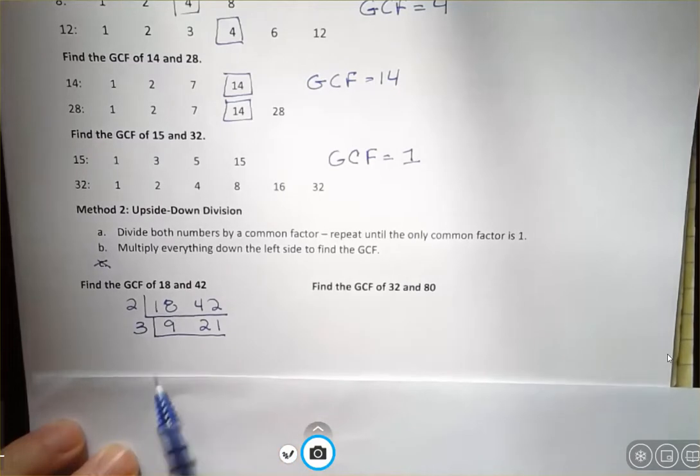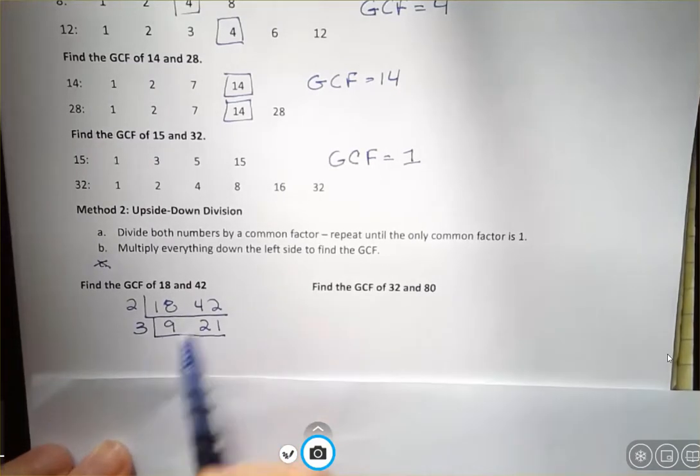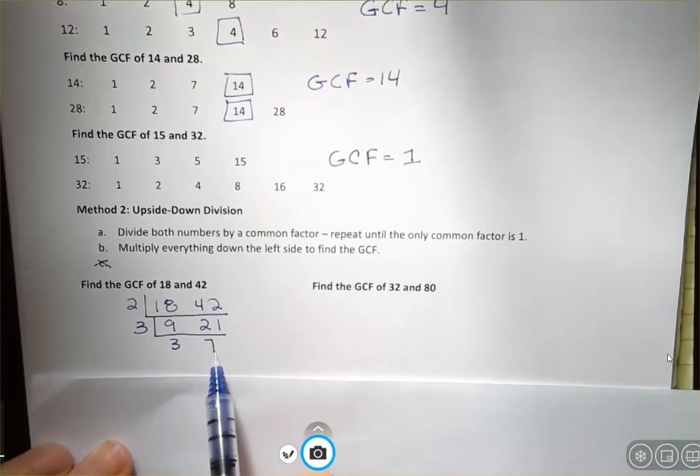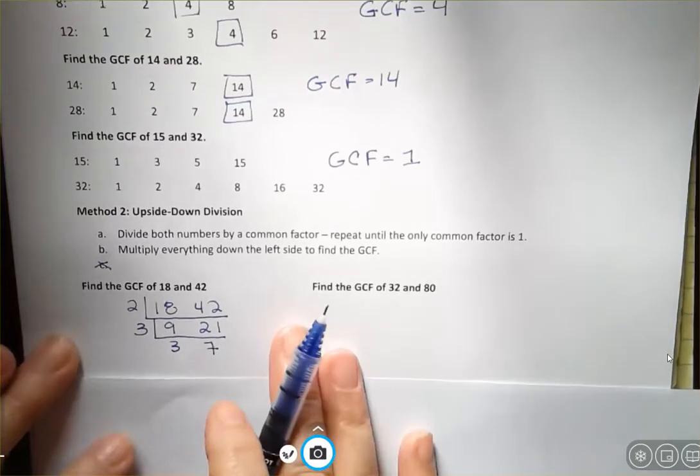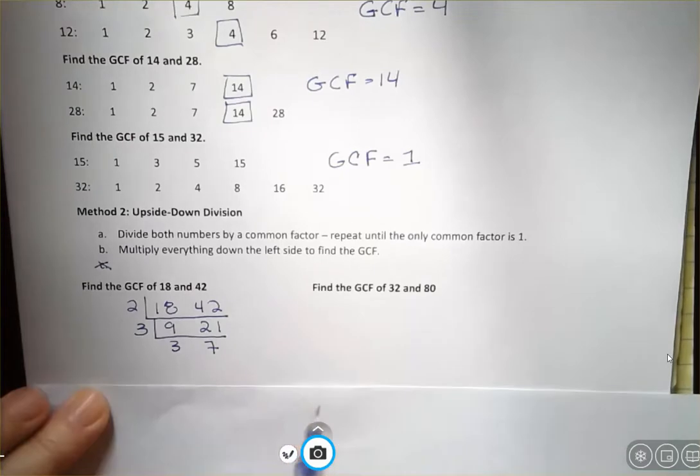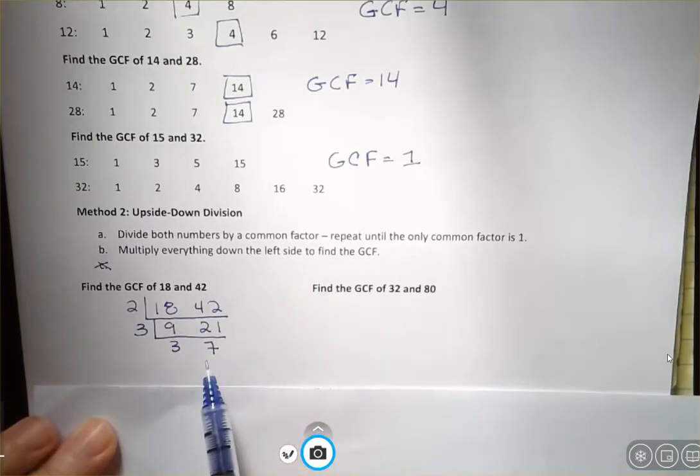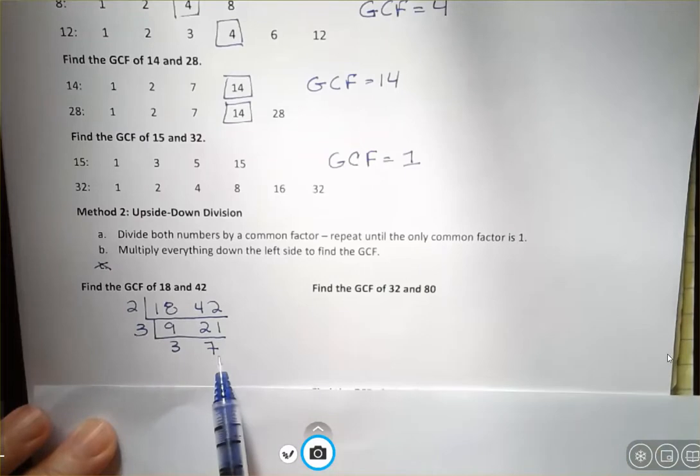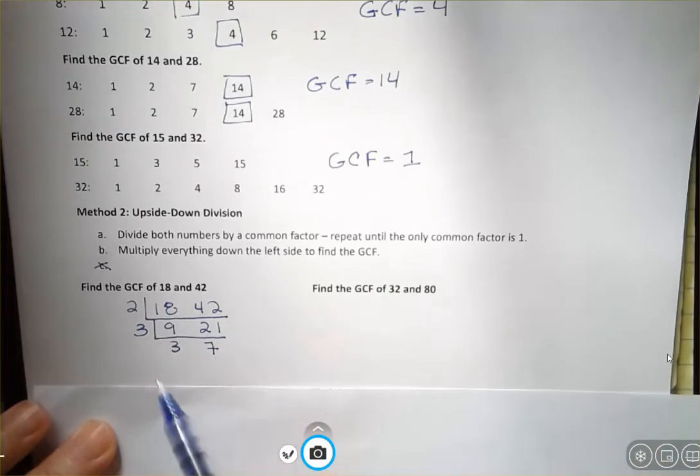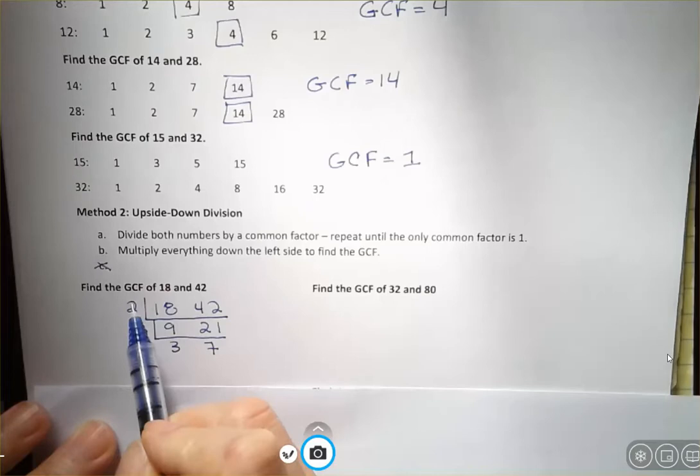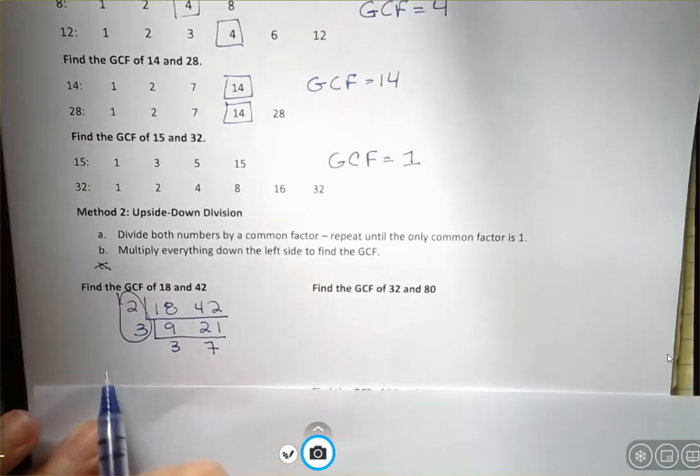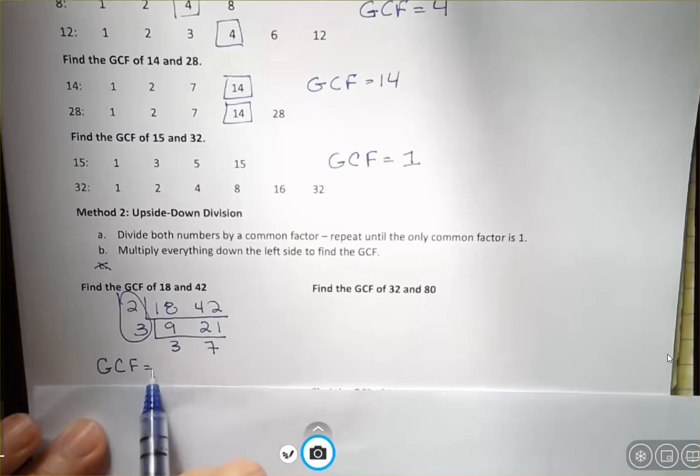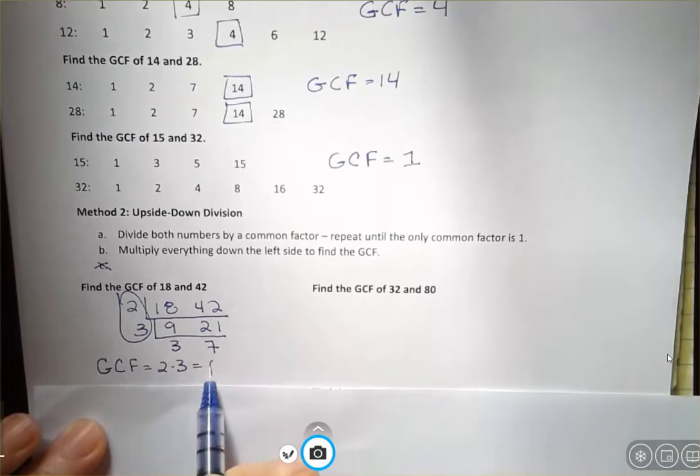And I can see that three goes into both of these. And if you're not sure, of course, you can use your calculator to find those numbers they have in common. Three goes into nine three times, and three goes into 21 seven times. Then you ask yourself, is there anything that goes into three and seven? And again, we want to do this until the only common factor is one. And as we said before, everything has a one in common. So there's nothing. So then we're going to multiply everything on the left side and find our GCF. So our greatest common factor here is two times three, which is six.